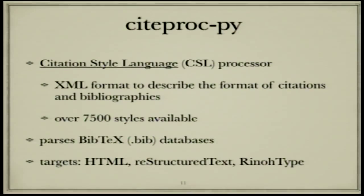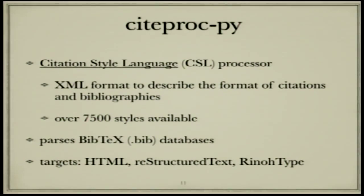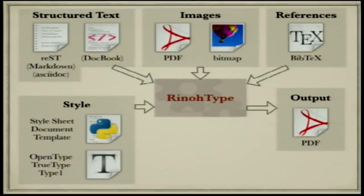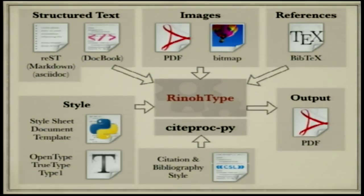I also quickly mentioned CiteProcPy, a sister project to RhinoType. It's basically a CSL processor — CSL is a standardized XML format to describe the formatting of citations and bibliographies. Many styles are already available so you probably don't need to write your own. It parses BibTeX databases and can output formatted citations and bibliography as HTML, reStructuredText, or using the internal RhinoType representation. It's not yet usable from within reStructuredText or Sphinx, but that should be a very small step.